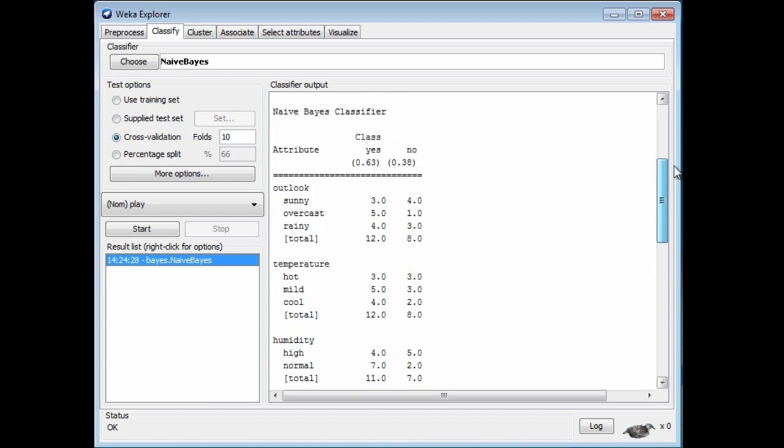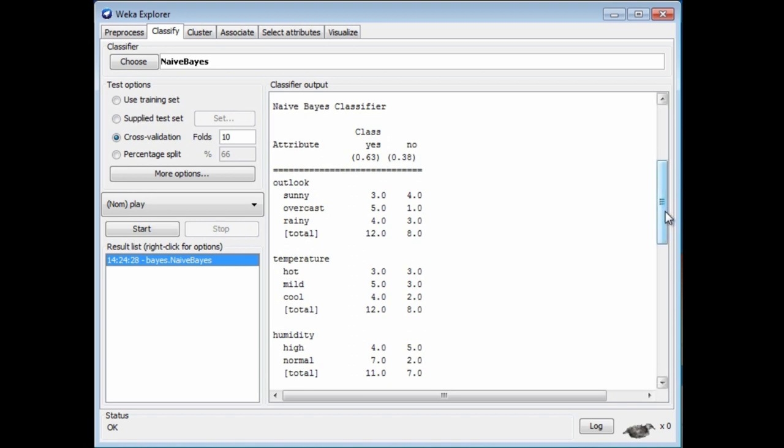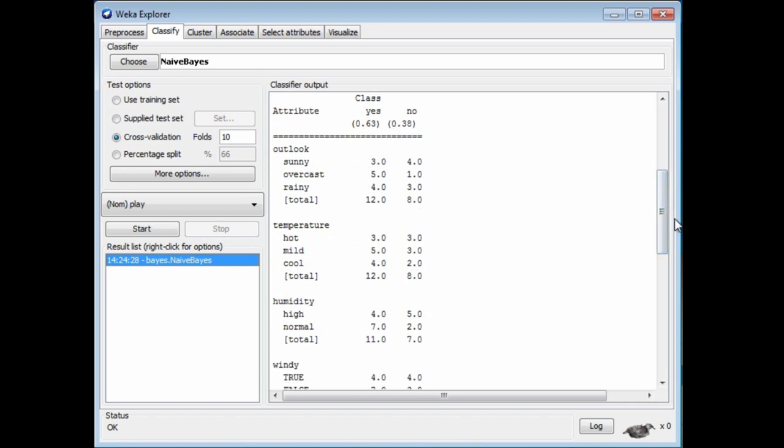The success probability calculated according to cross-validation. More interestingly, we get the model. The model is just like the table I showed you before. Divided under the Yes class and the No class, we've got the four attributes: Outlook, Temperature, Humidity, and Windy. Then for each of the attribute values, we've got the number of times that attribute value appears.